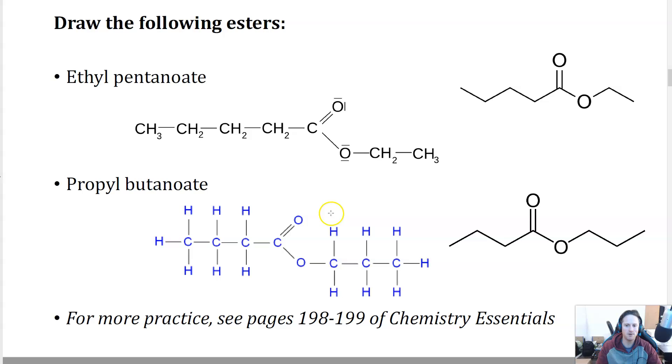And this is propyl butanoate. You can see different representations here. Condensed structural formula, full structural formula where you can see all the hydrogens coming off and the skeletal structure here. And your essentials book and the work that I'm going to set you has more practice doing naming.